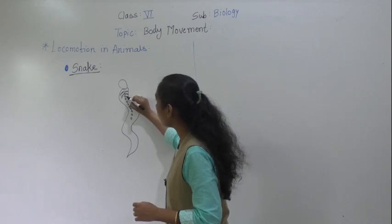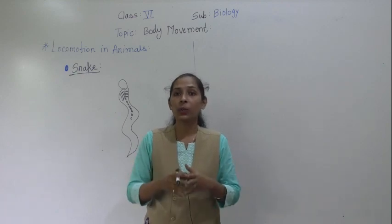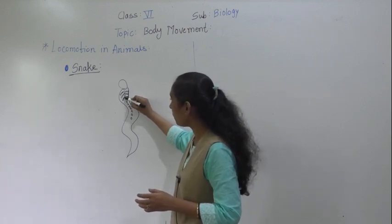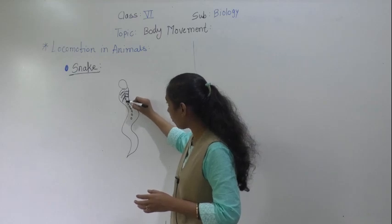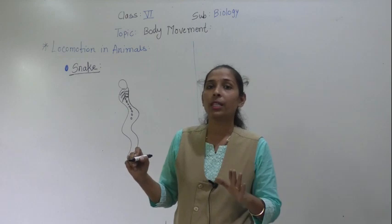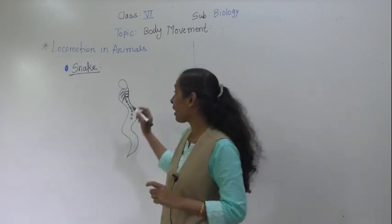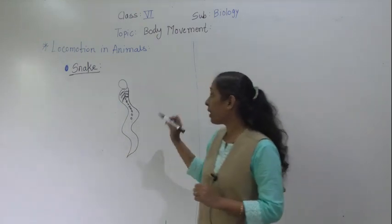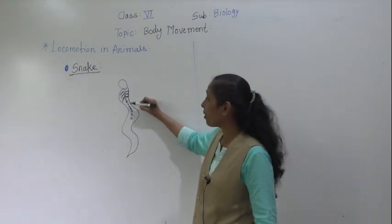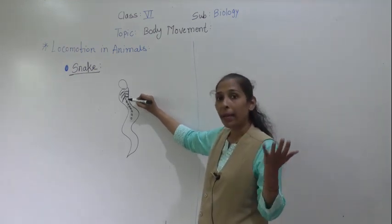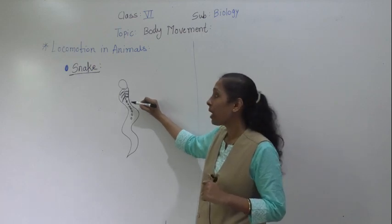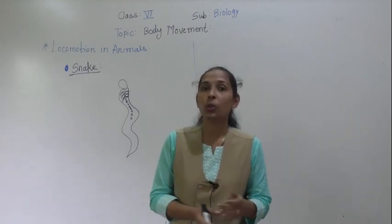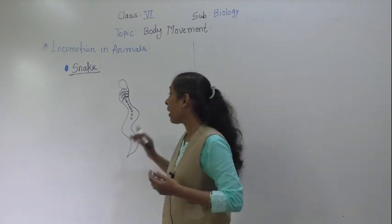Each vertebra has a pair of ribs, and that pair of ribs is connected to the belly scales at the bottom of the body. With the help of this flexible vertebral column, the pair of ribs connected to the belly scales, and strong muscles, the snake can do movement — the snake shows locomotion.